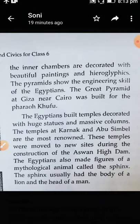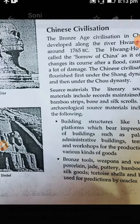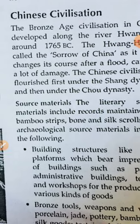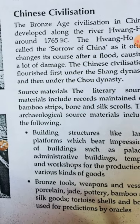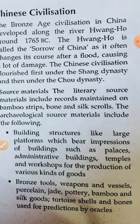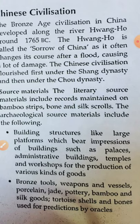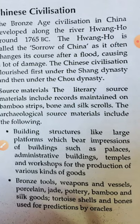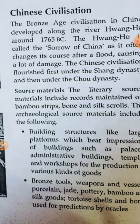Now we come to the next civilization — Chinese civilization. This civilization developed along the River Huang Ho around 1765 BC. The Huang Ho is called the 'Sorrow of China' because it often changes its course after a flood, causing a lot of damage.